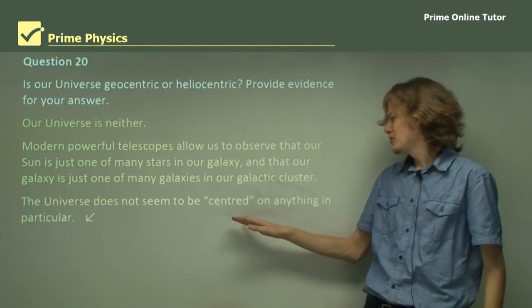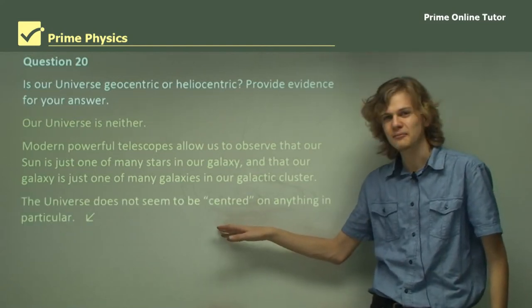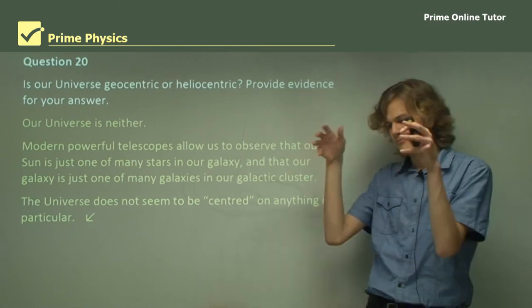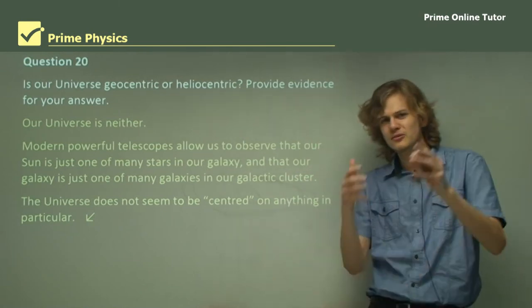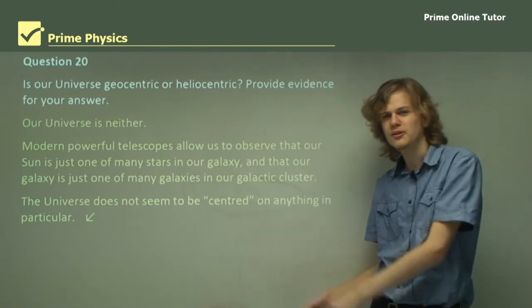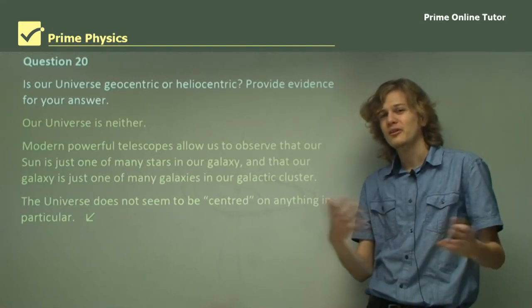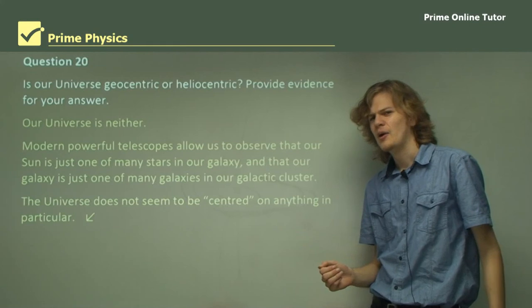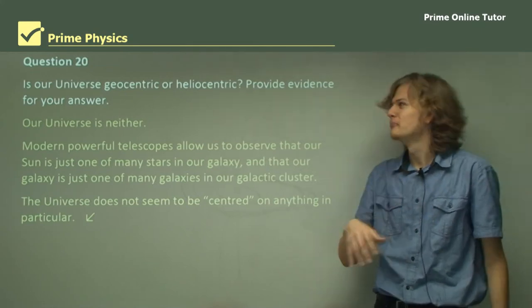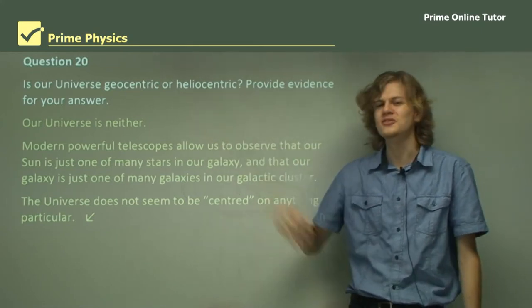So, our universe does not seem to be centered on anything in particular. It's not Milky Way-centric. It's not geocentric or heliocentric. It's not even supercluster-centric. As far as we can tell, the universe doesn't even really have a center. However, if we were only talking about our own solar system, then our solar system is heliocentric.